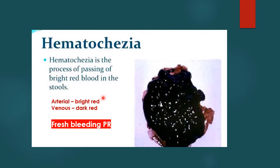The most important presenting feature is hematochezia, which is fresh bleeding per rectum. It can be bright red if it is an arterial source and the bleeding can be brisk, or venous when the blood is dark or dark red in colour.